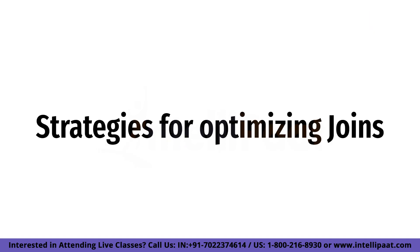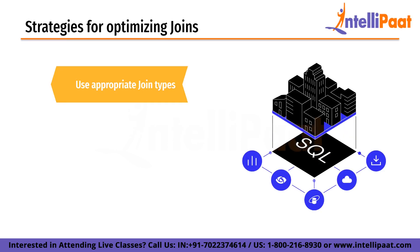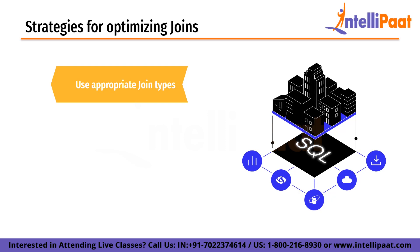Now let's look at strategies for optimizing joins. When working with SQL joins there are several performance considerations to keep in mind. First, use appropriate join types — choosing the right join type is important for optimizing performance. In general, inner joins are faster than outer joins because they involve less data. However, there may be cases where an outer join is necessary to include all the data you need.